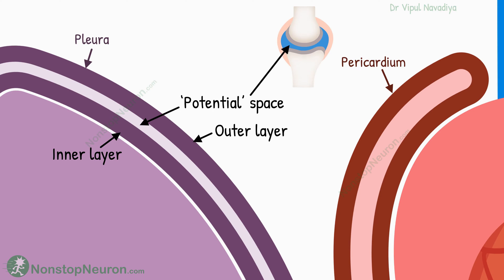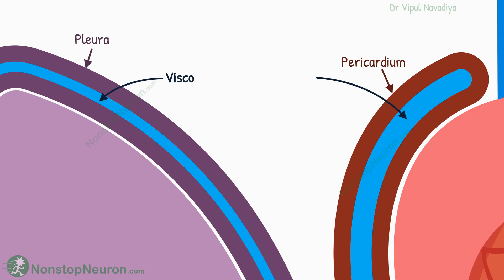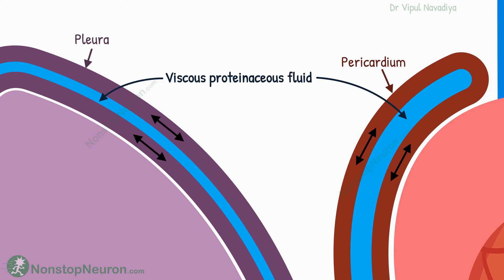A potential space is also present in the synovial cavities at the joints. These spaces are filled with viscous proteinaceous fluid that lubricates the surface, so the layers can slide over each other. Most of these spaces also have negative pressure, which helps hold both the layers together.